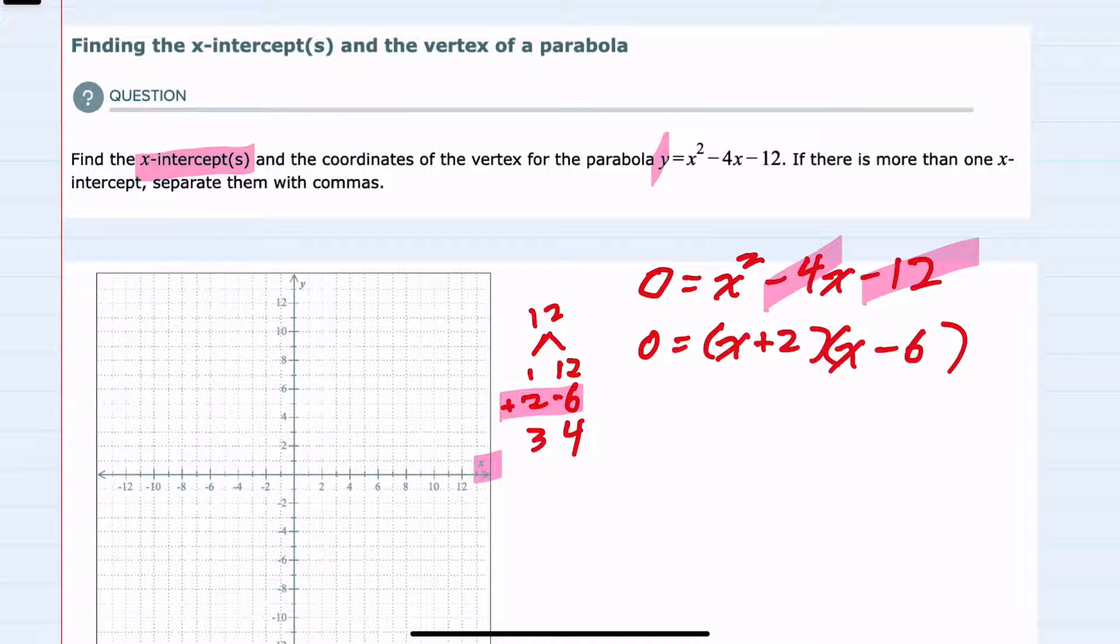We now have two factors being multiplied with the result of 0. That means that one of those two must be 0. So either x plus 2 must be 0, or x minus 6 must be 0. From the first, we can subtract the 2 over, and we have x equals negative 2 as an intercept. I'll go ahead and represent that on the graph.